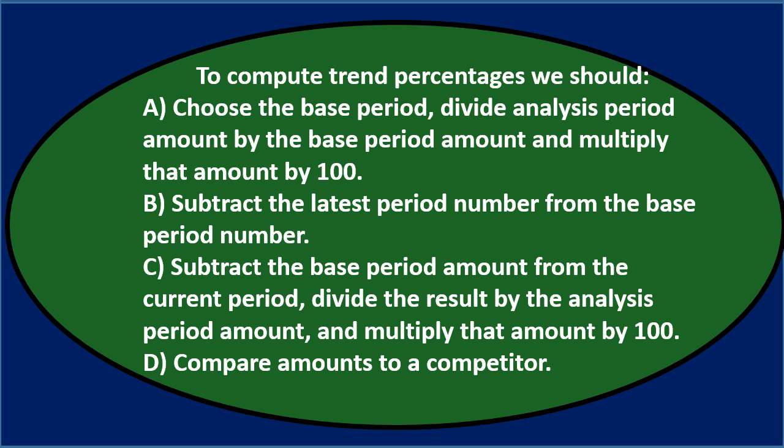First question: to compute trend percentages we should either a) choose the base period, divide analysis period amount by base period amount, and multiply that amount by 100; b) subtract the latest period number from the base period number; c) subtract the base period amount from the current period, divide the result by the analysis period amount, and multiply that amount by 100; or d) compare amounts to a competitor. Let's go through this again using the process of elimination.